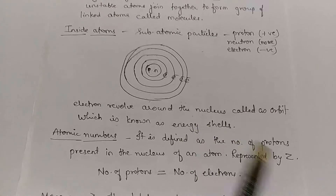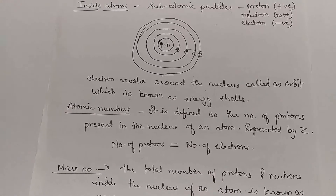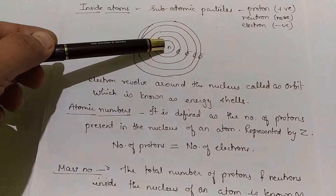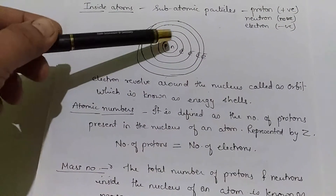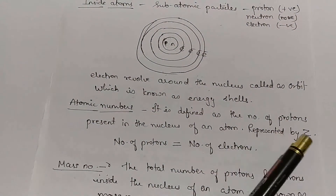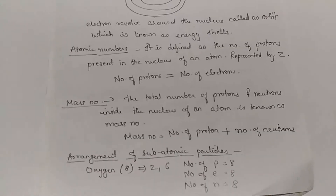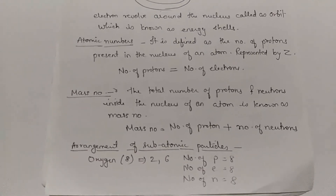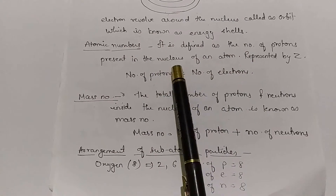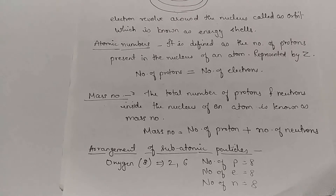The next concept is atomic number. Atomic number is defined as the number of protons present in the nucleus of an atom. The number of protons present in the nucleus is the atomic number, and it is represented by Z. Also, the number of protons is always equal to the number of electrons in an atom.